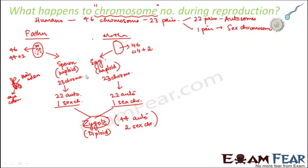What we need to understand in genetics are the principles that decide what the child's hair color will be if the father's is brown and the mother's is black. We will understand the underlying principles that decide how the child will be when the father and mother have similar or different traits, and also under what scenarios a child gets a trait missing in both parents — for example, if the father has black hair and the mother has brown hair, the child might end up with reddish hair.